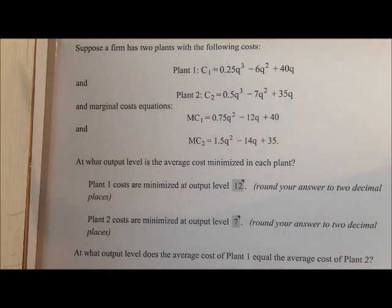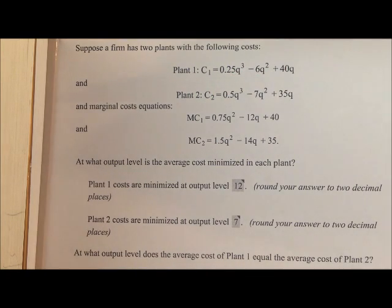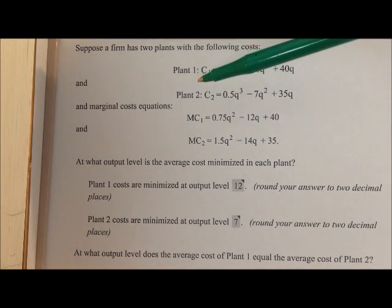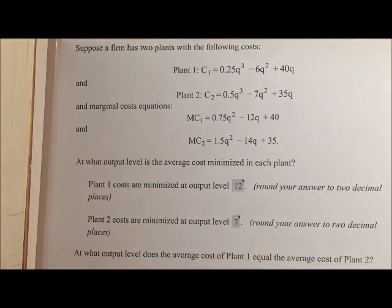In this particular problem, we have a firm with two plants, and we're given the firm's total cost curve for each of those plants, C1 and C2, and then we're also given the marginal cost curve for each of those two plants, MC1 and MC2.